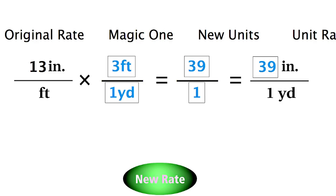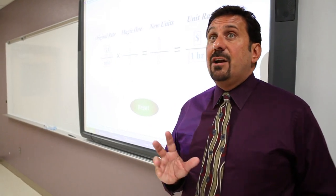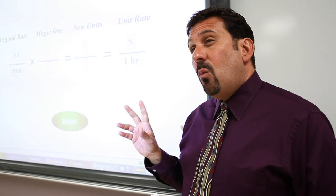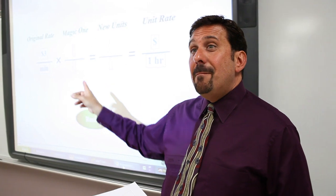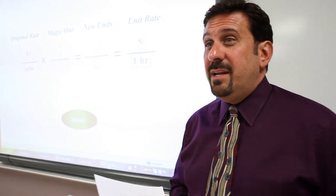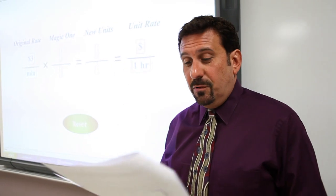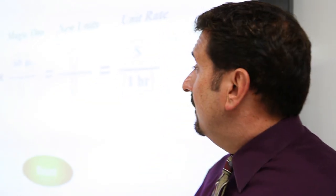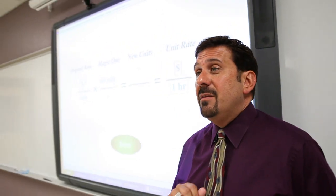Take a look on page 197 and look at letter B. The problem starts out with the original rate: $3 per minute. What we're going to try to do is figure out how many dollars per hour that is. What do we need to put in for the magic one? What would we need to get from dollars per minute to dollars per hour? 60 minutes over one hour — because there are 60 minutes in one hour. We need to end up with hours in the denominator, so we need to get rid of the minutes.